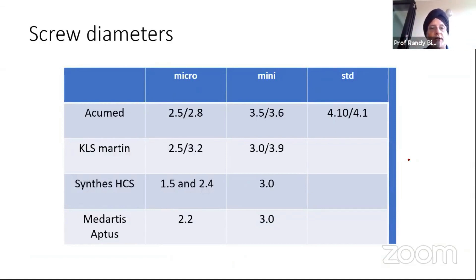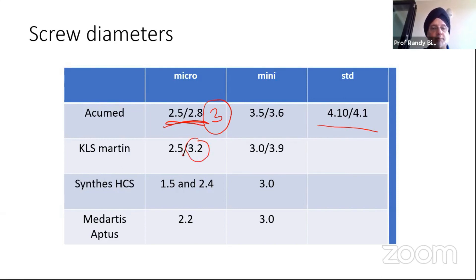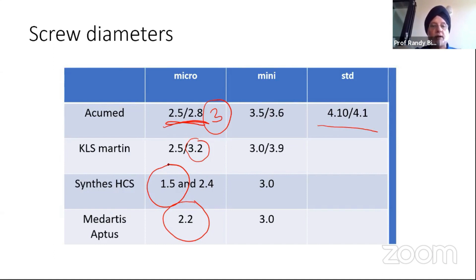Looking at the current screws available and their diameters: if you're doing a proximal pole fracture with a really small piece, you'll probably be using something like an Acumet micro, especially in a female where the scaphoid is about three millimeters — you want to use only a 2.5 millimeter micro screw, as the trailing end is 2.8. A mini would become too big, and a standard would break the scaphoid in a female. The KLS Martin's trailing end is wider than the leading end, so you'd have to use something small. Perhaps only a Medartis at 2.2 millimeters all the way through, or a Synthes at 1.5 millimeters all the way through for really small fragments. I will sometimes use a non-cannulated headed screw from the handset that I will bury under the cartilage.